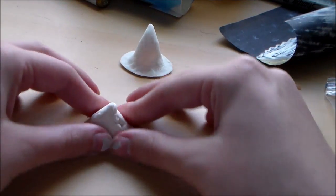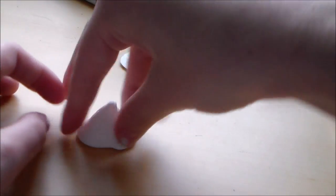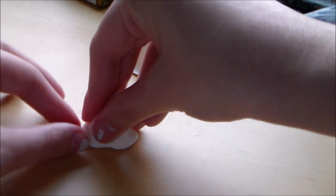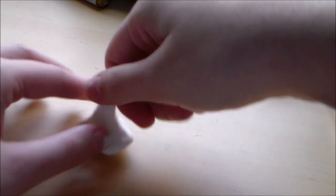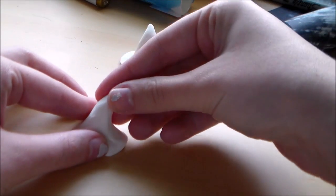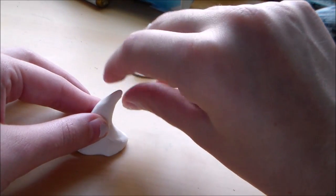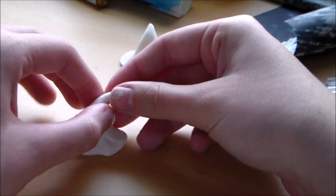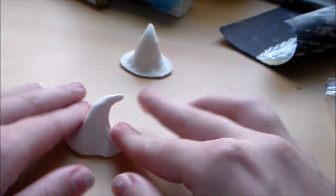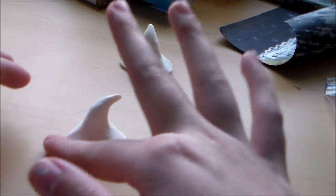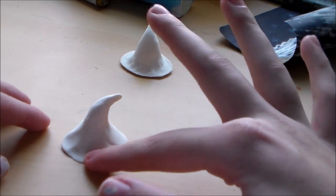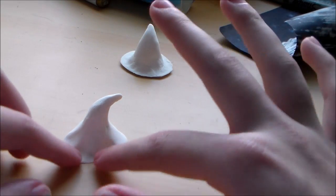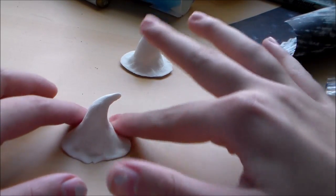You're going to press it down and then start pushing up towards the center. Kind of make a triangle shape. It's going to get thinner as it goes out towards the top. And then you're going to push down at the bottom to make the brim. Kind of flatten it out with your finger.